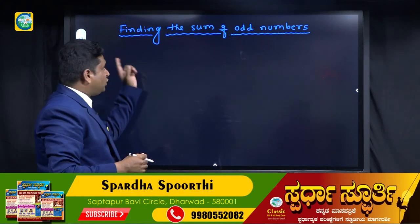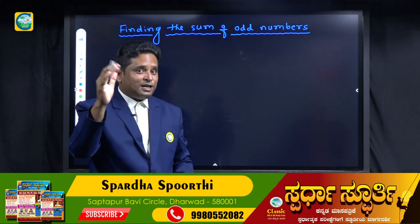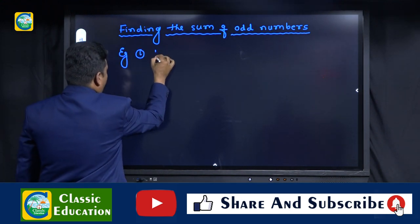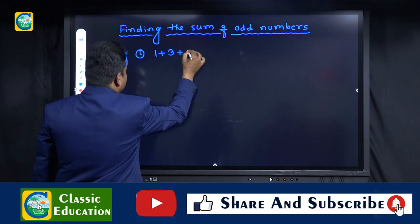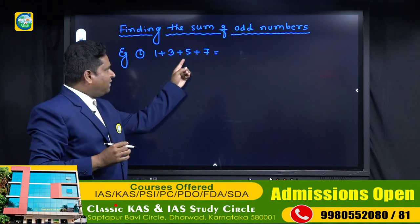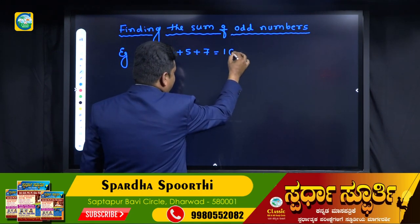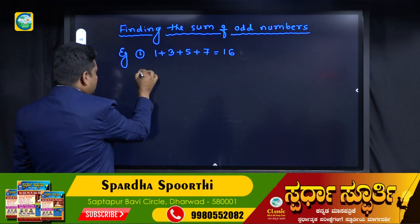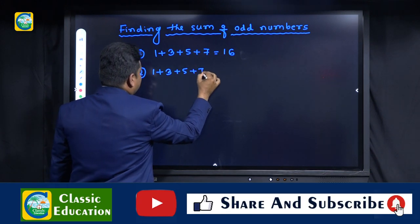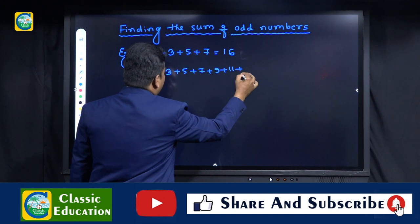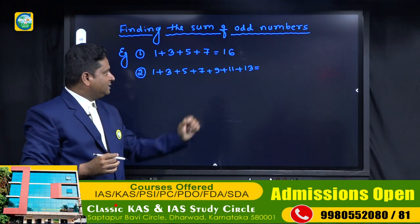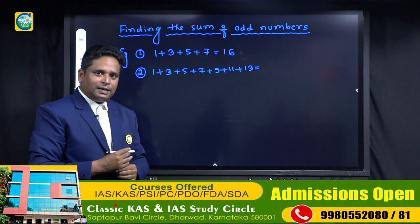Now I will show you how to find the sum of odd natural numbers, the sum of even natural numbers, and the sum of natural numbers — one by one. Finding the sum of odd numbers: Example 1 — 1 + 3 + 5 + 7. The sum is 16. One more example: 1 + 3 + 5 + 7 + 9 + 11 + 13. The sum is 49.